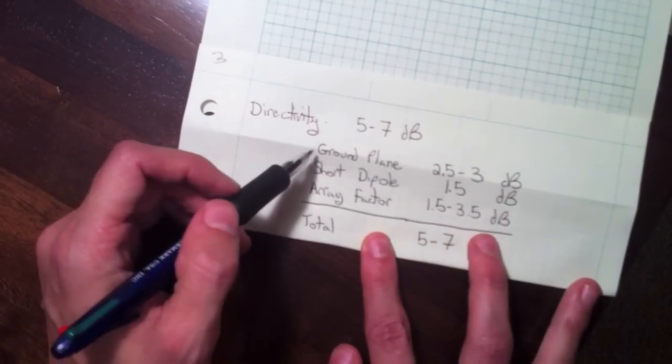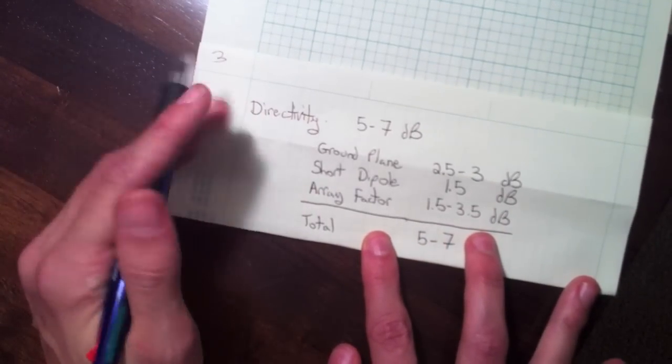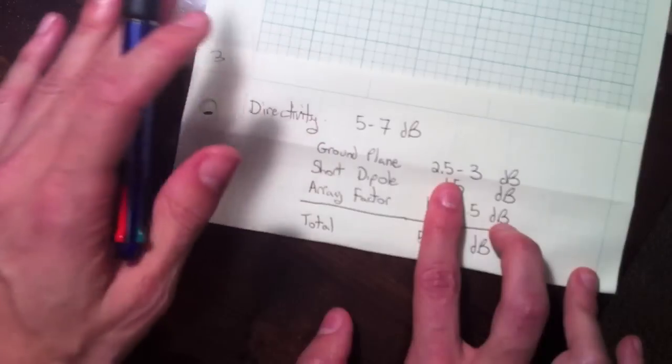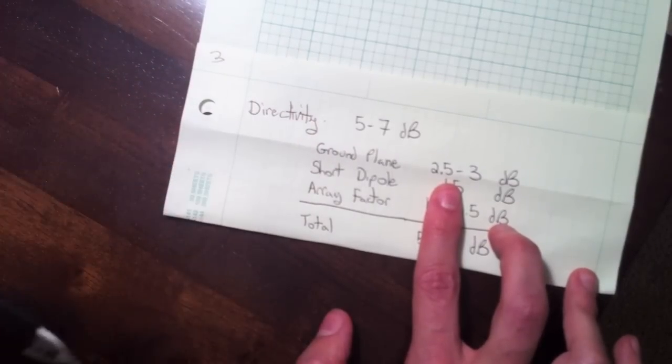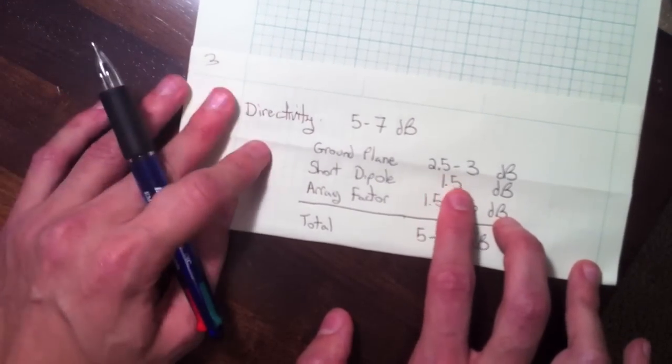Remember this is not on a large ground plane, so it's not infinite. If you have a perfect infinite ground plane, no radiation would go in the downward direction, which would increase your directivity by 3 dB.